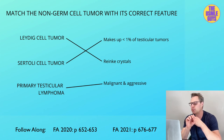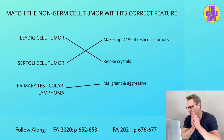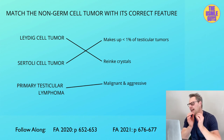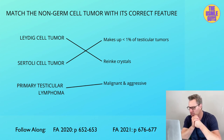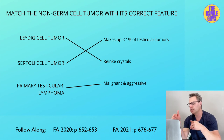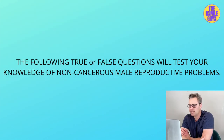Finally, we have the primary testicular lymphoma, which is an aggressive and malignant testicular tumor — typically a diffuse large B-cell lymphoma. This is the most common testicular cancer in older men.